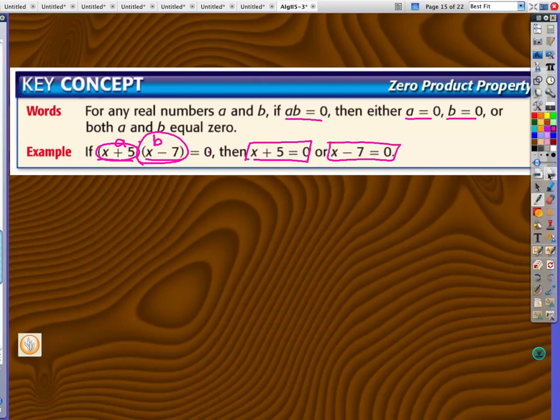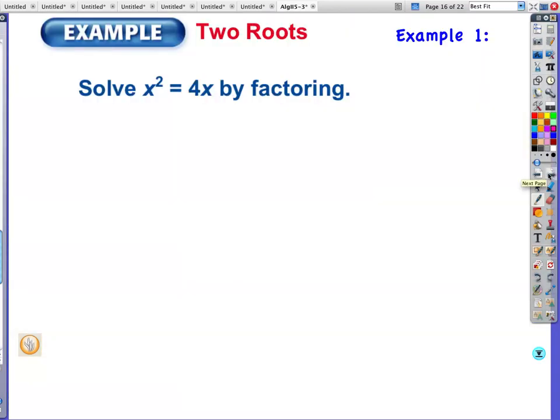Example number one: x squared equals 4x by factoring. We can't factor unless we have it set equal to zero so x squared minus 4x equals zero. Is there a common monomial factor? I believe there's an x in both terms so I'm pulling out an x.